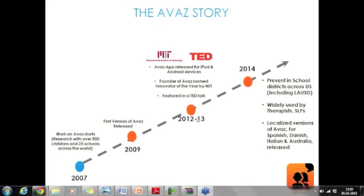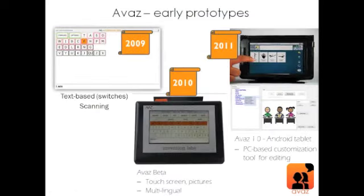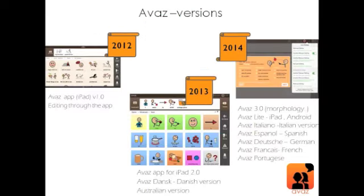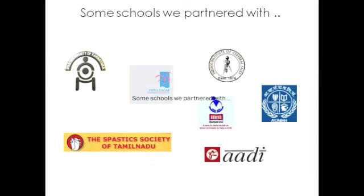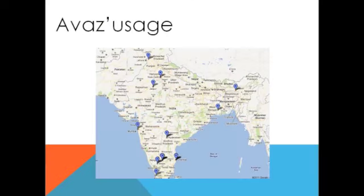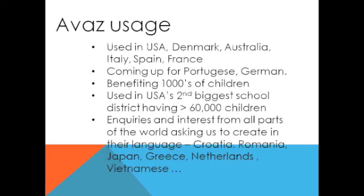AWAS is the only AAC software in Indian languages and comes with an Indian voice. We have tailored the vocabulary and customized it for Indian culture — food, festivals, currency, and more all depict Indian content. The app started as a device in 2010, came out on Android in 2011, and gradually evolved. Partner schools include Vidya Sagar, Spastic Society of Tamil Nadu, Indian Institute of Cerebral Palsy in Calcutta, and others. Right now it is being used in the US as well, benefiting thousands of children across the world.